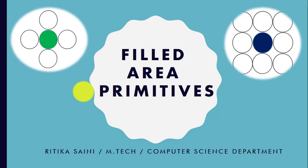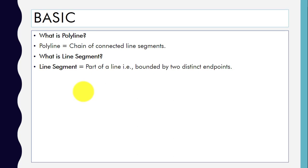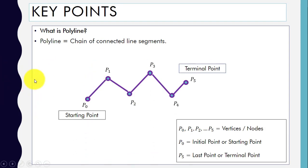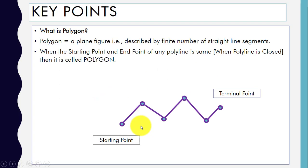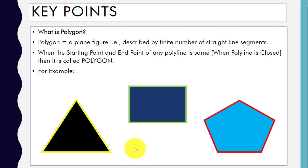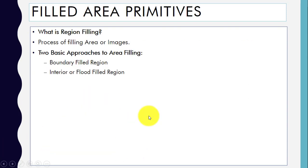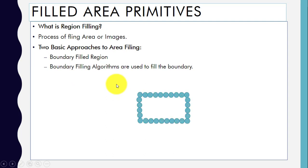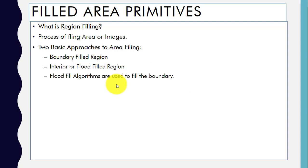To summarize: we covered filled area primitives. A polyline is a chain of connected line segments with two endpoints joined to form a line. A polygon is formed when the starting point and endpoint of any polyline are the same — you can see examples where the start and end points match. Region filling is the process of filling an area or image using two approaches: boundary filled region and flood filled region.